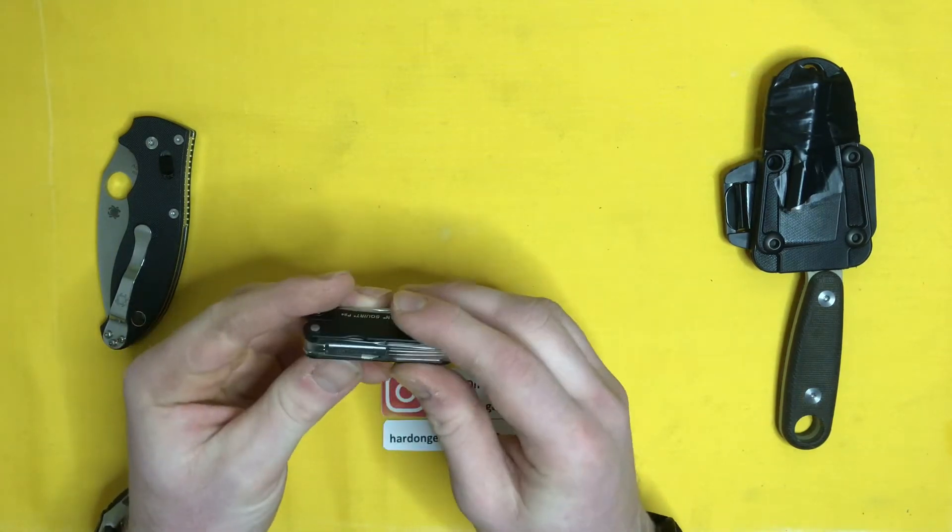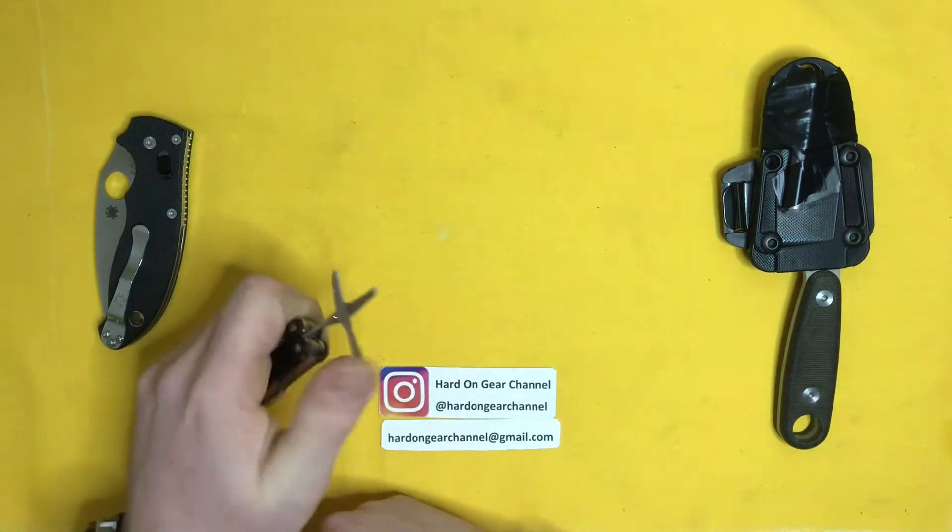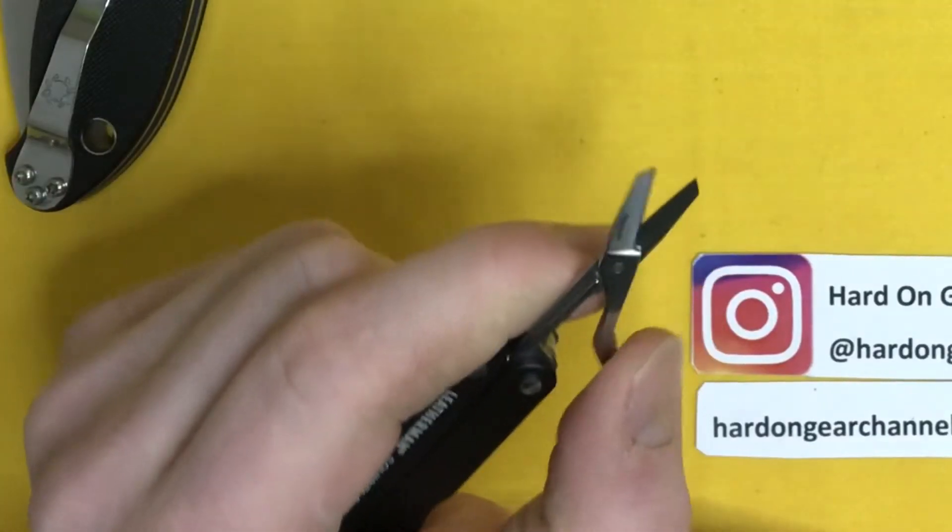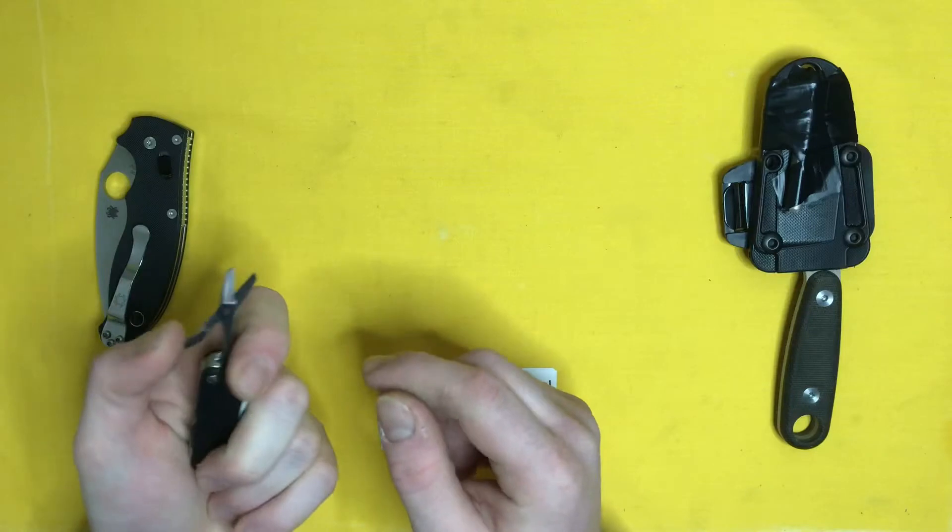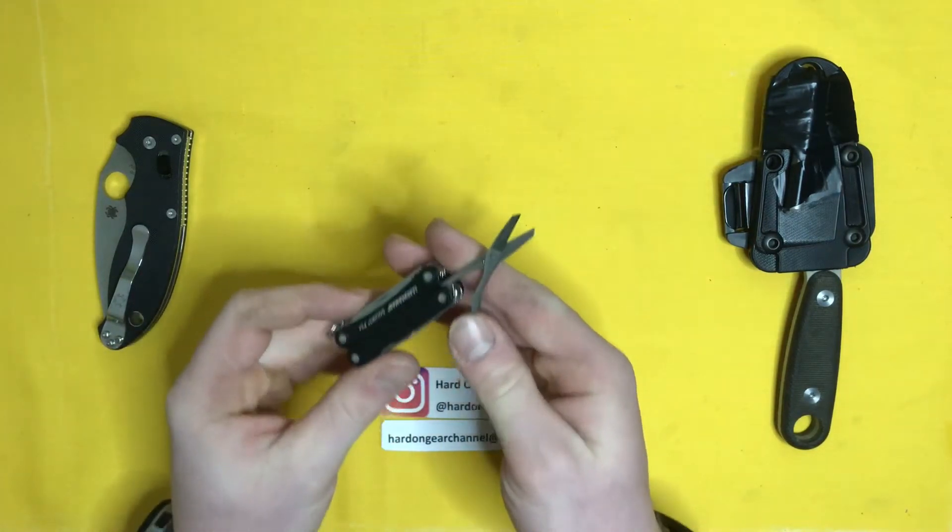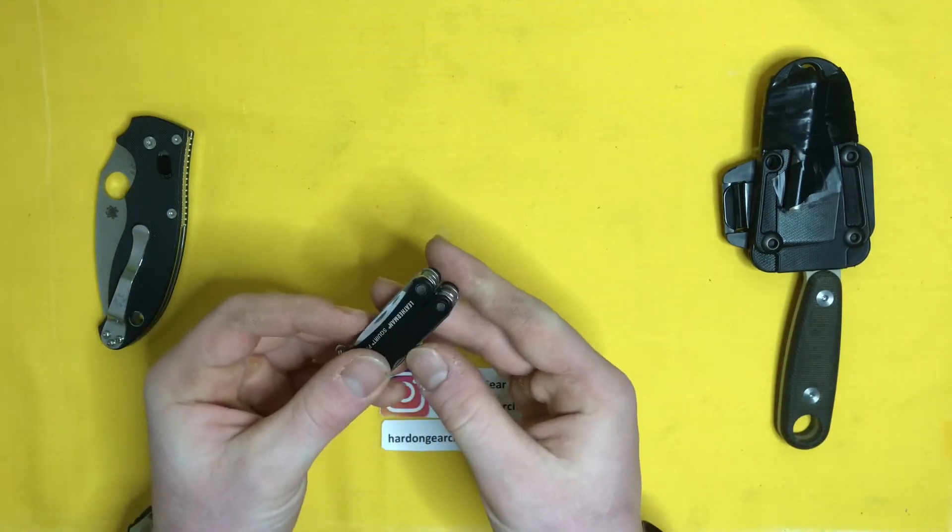The scissors have gotten more use than anything on this. The pliers probably come close, but the scissors on this are pretty handy. They work really well. I'm curious to see how long this little spring will hold up. It seems like it's quite well built and I believe for the price of $40, that feels like it's good enough quality to justify the purchase. So if it lasts for a couple years, great.